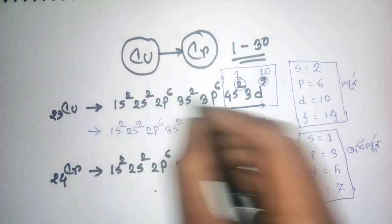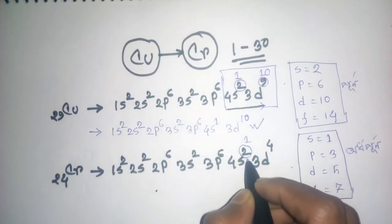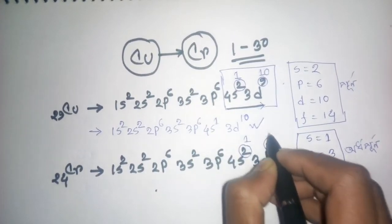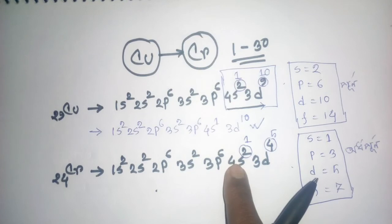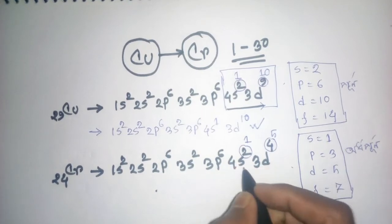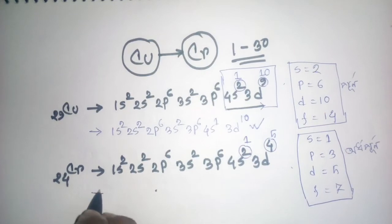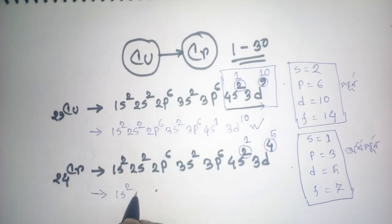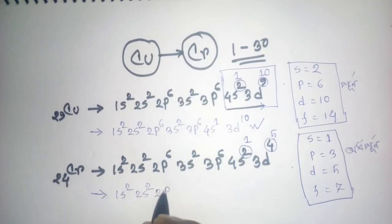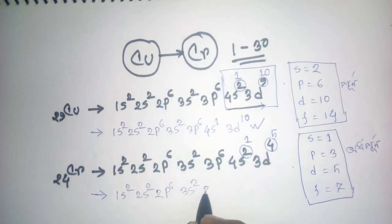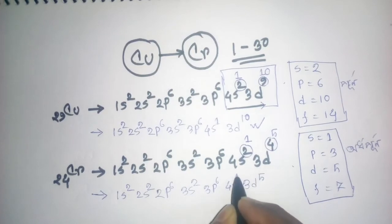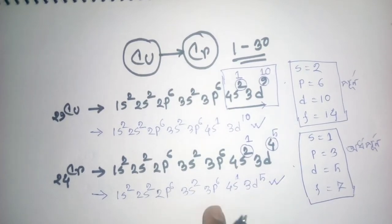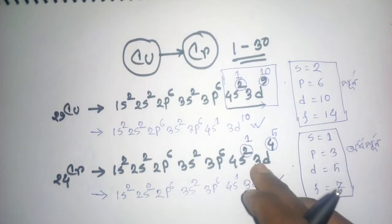For chromium, the correct configuration is: 1s², 2s², 2p⁶, 3s², 3p⁶, 4s¹, 3d⁵. This is the correct electron configuration. When the d orbital has five electrons, it is half-filled, which is more stable.